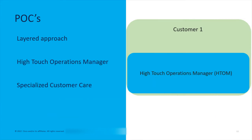Looking at it from your point of view as the customer: something goes wrong, and you have this layered approach model for support, figuring out what to buy, and then buying it. If you have problems, we also have what's called a High-Touch Operations Manager, or HTOM. They specialize in customer care and answer all your questions — whether you can't reach a license, can't get software, whatever. They are the first point of contact when you need help. Who your specific HTOM is will be covered when briefing specific customers.